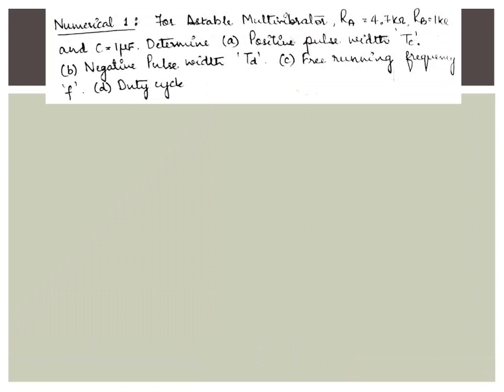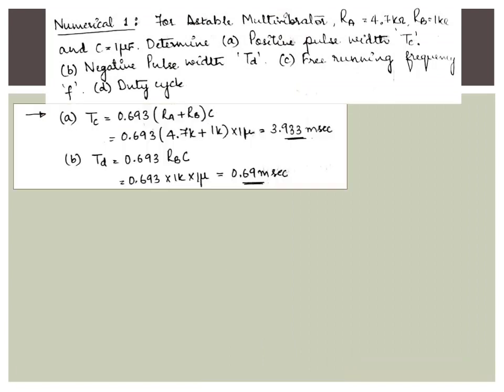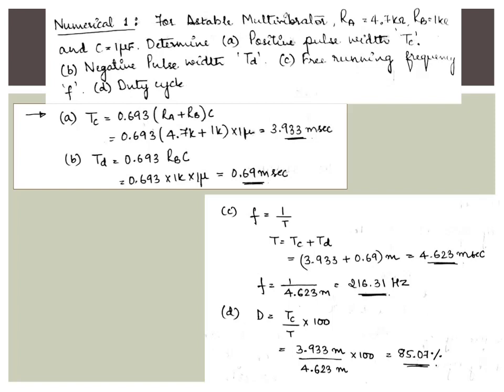Numerical 1: For an astable multivibrator, given values of Ra, Rb, and capacitance C, determine the positive pulse width TC, negative pulse width TD, free-running frequency, and duty cycle. To compute the positive pulse width (charging time), we use the general equation: 0.693 × (Ra + Rb) × C. Substituting the given values, the charging time TC is equal to 3.933 milliseconds. The negative pulse width TD, corresponding to the discharging time, is obtained as 0.69 milliseconds.